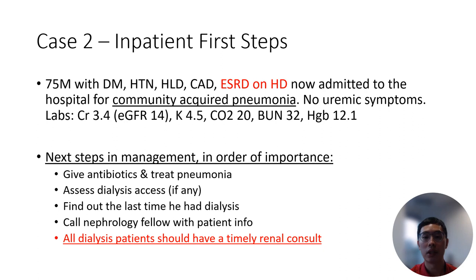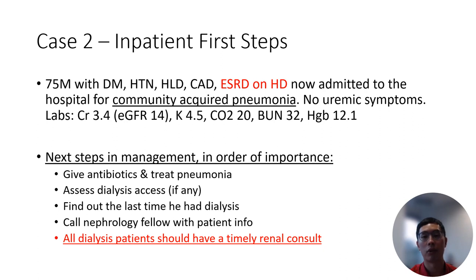Additionally, it is helpful if you can provide the patient's dialysis access information and when they last got dialysis to help us triage the patient. Ordering a chemistry panel can also help us to determine if emergent dialysis is needed or if the patient's needs are less urgent.